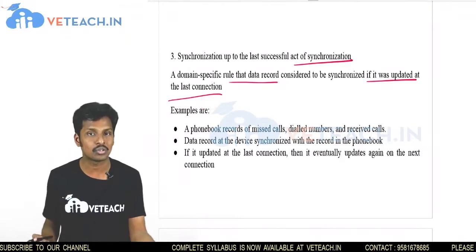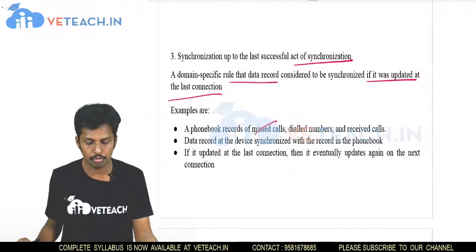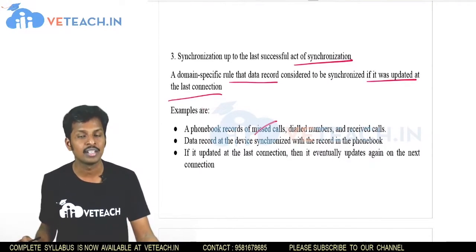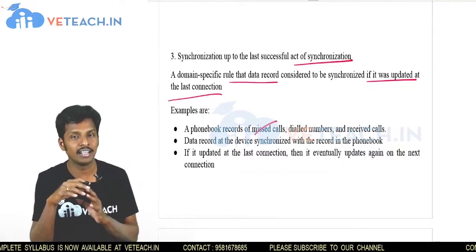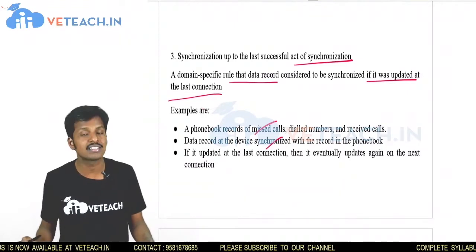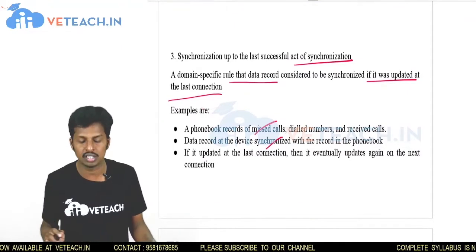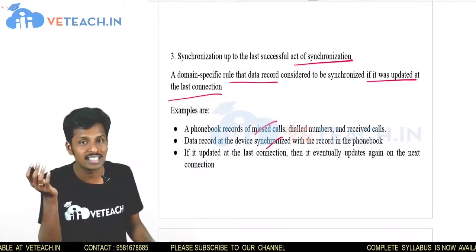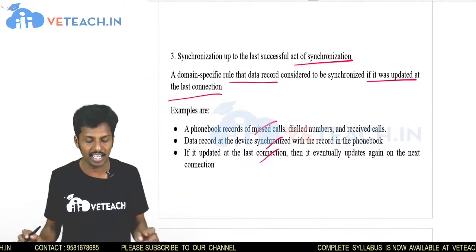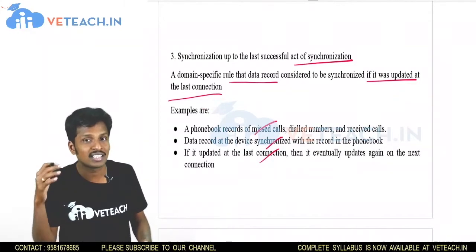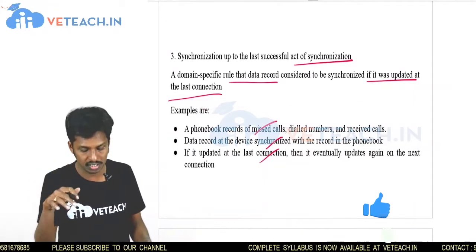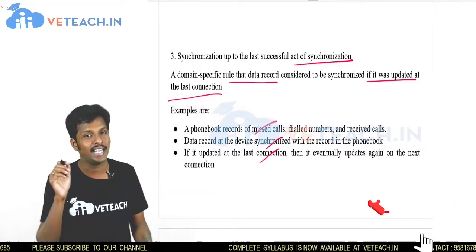An example is a phone book record of missed calls, dialed numbers, and received calls. These are not backed up every time, so synchronization is done when a backup is taken. The data record at the device is synchronized with the record in the phone book. If the data was updated at the last connection, it updates again on the next connection — automatically updating received calls, missed calls, and dialed calls.